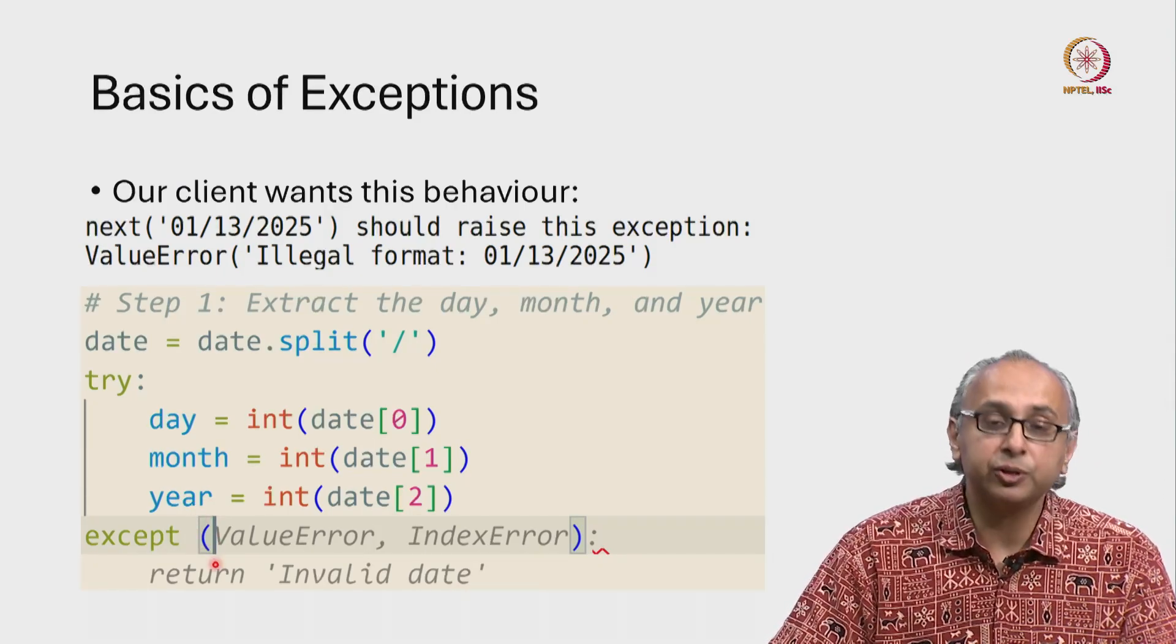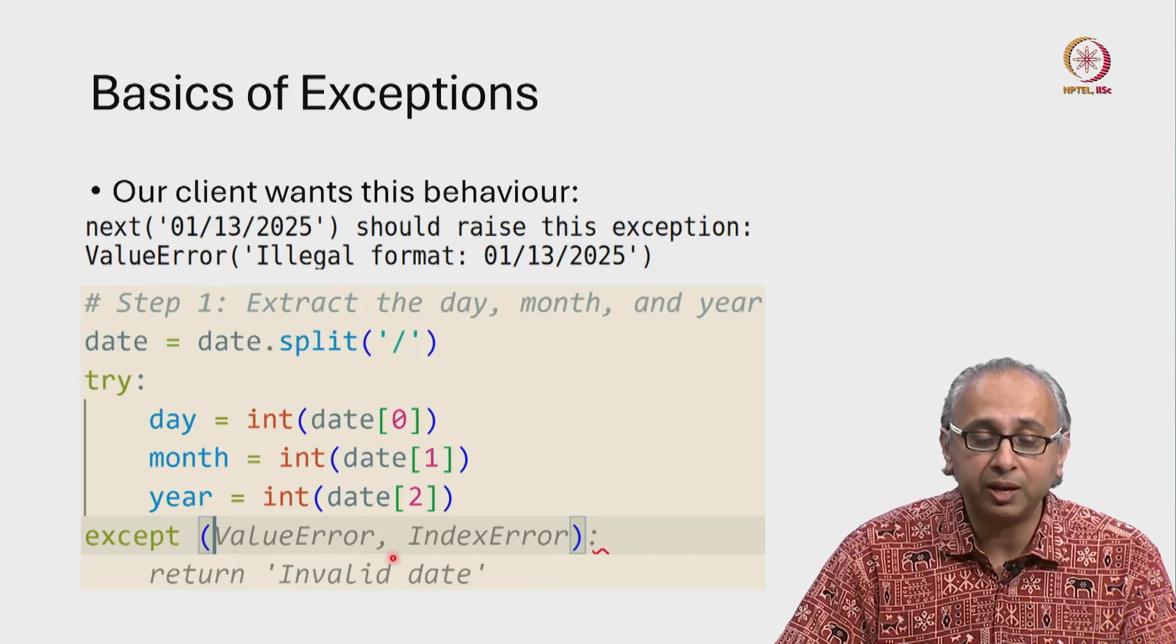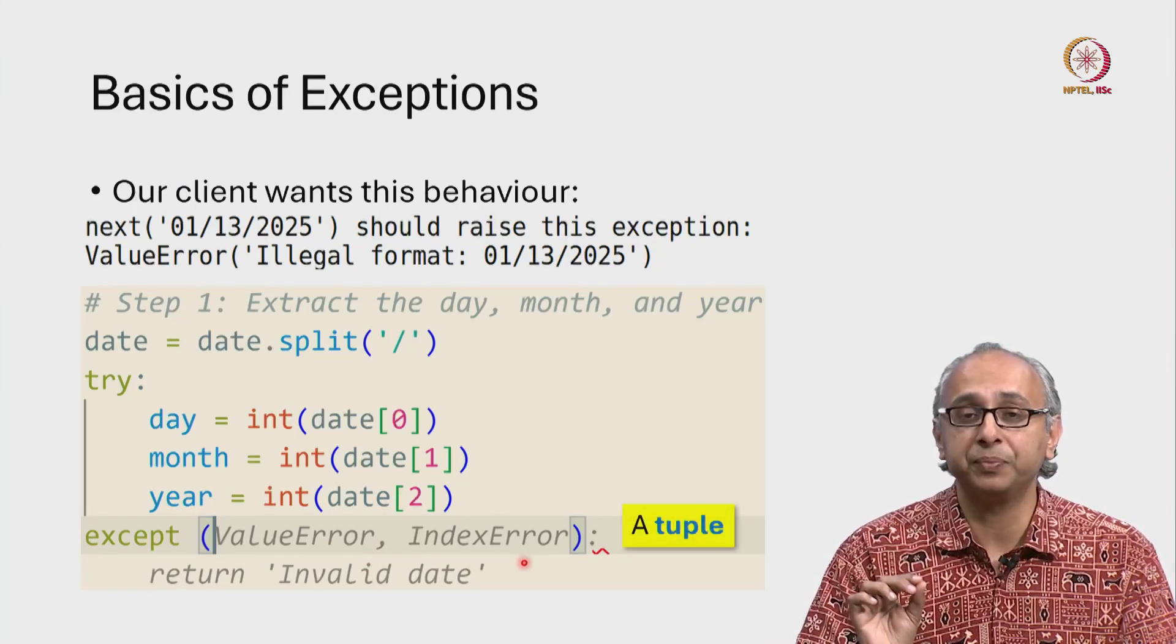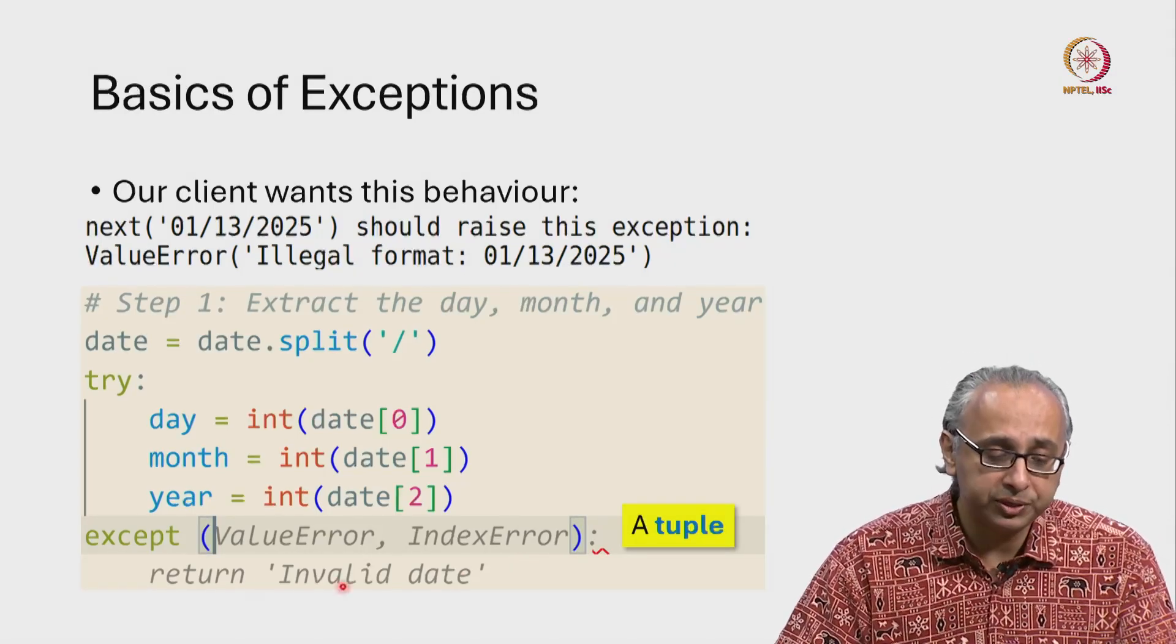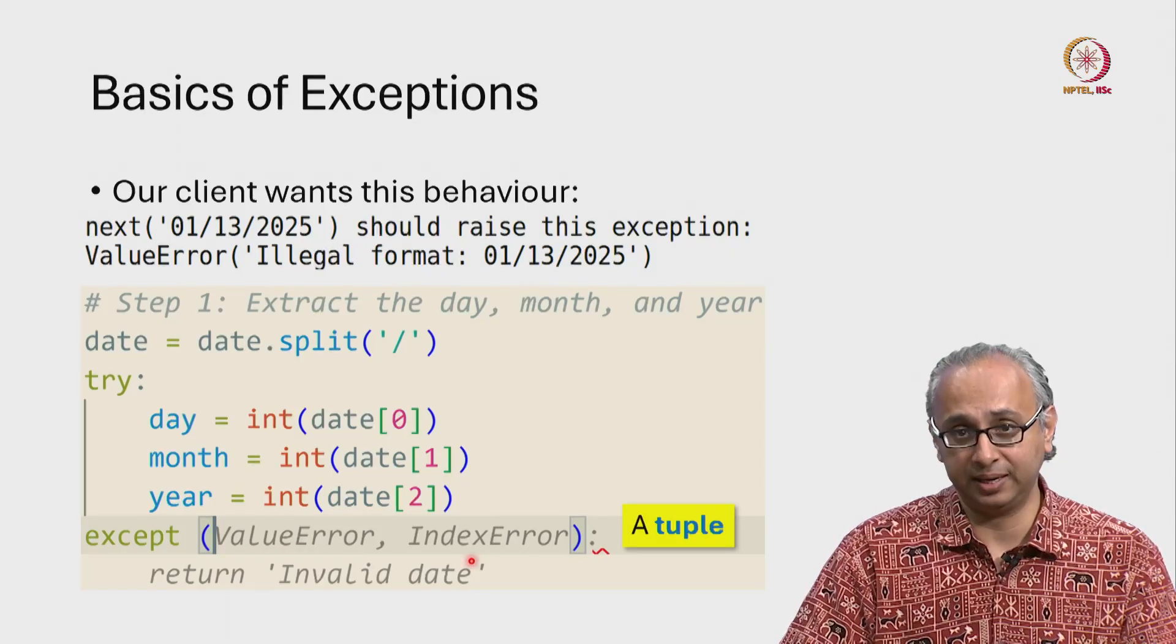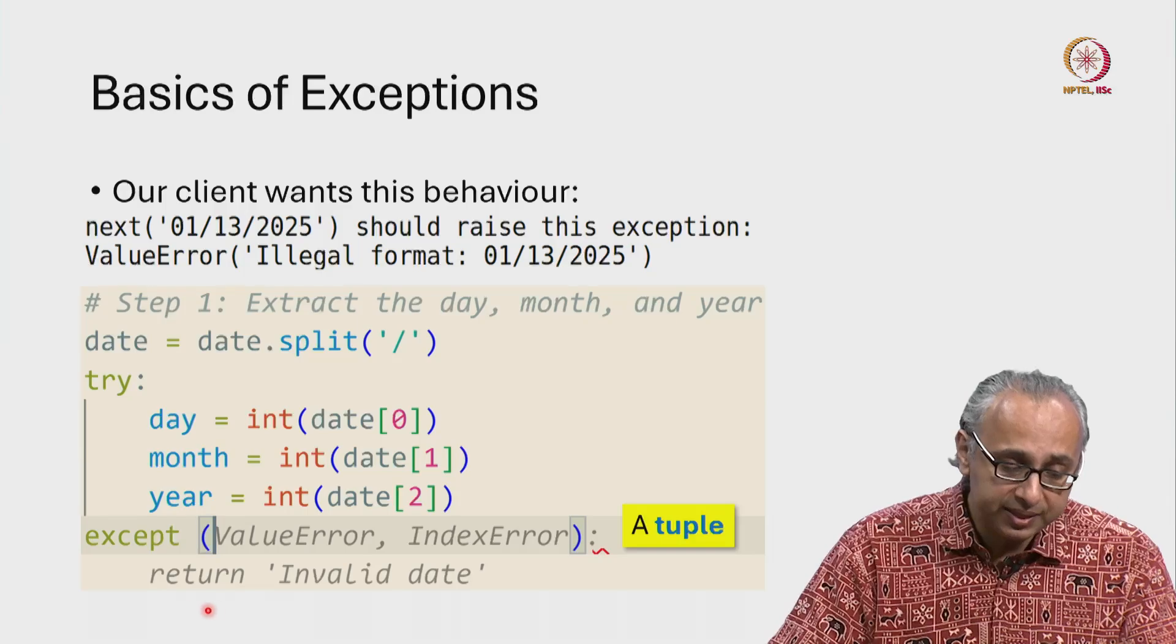By the way, whenever you have this kind of syntax where we have something inside brackets and then we have commas inside, that is something called a tuple. So in this case, this is a tuple containing two items. What this is saying is, if we have a ValueError or an IndexError, then we will do whatever is in the accept case. In this case, our generative AI is suggesting that we return the string invalid date.